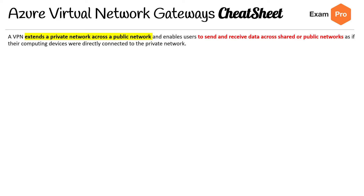Hey, this is Andrew Brown from ExamPro, and we are looking at the Azure Virtual Network Gateway cheat sheet. So let's jump into it — this one's a short one. A VPN extends a private network across a public network and enables users to send and receive data across shared or public networks as if their computing devices were directly connected to the private network. That's the basis of this cheat sheet.